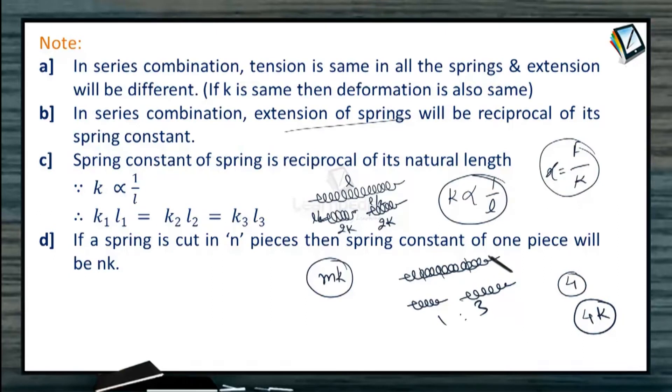then each piece will have the spring constant 4K. And then 3 pieces of this 4K are connected in series to produce this one. So it will become 4K by 3 when they are connected in series.